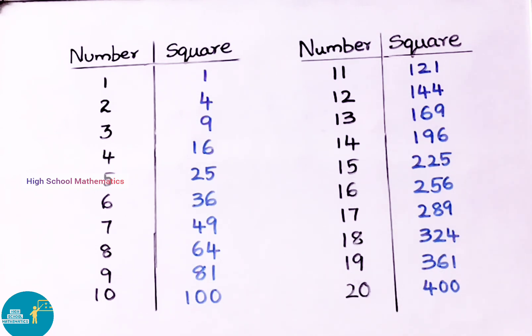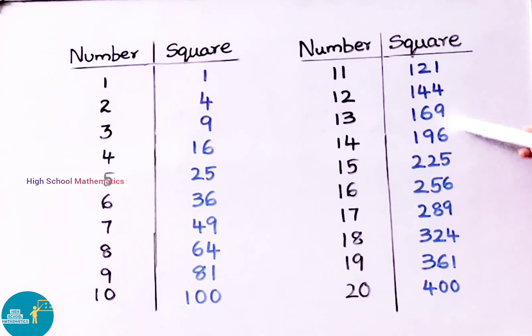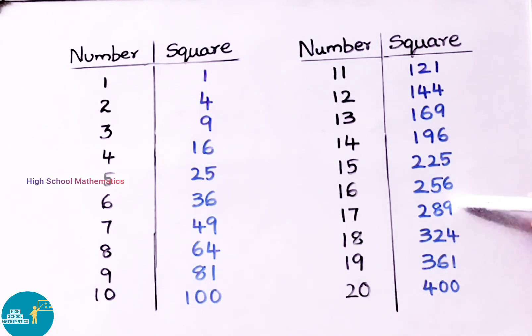Here also the last digit ends with 1, 4, 9, 6, 5, 1, 4, 9, 6, 5, and the ending number is 0.